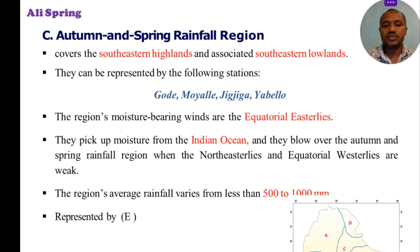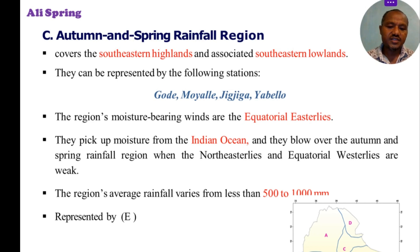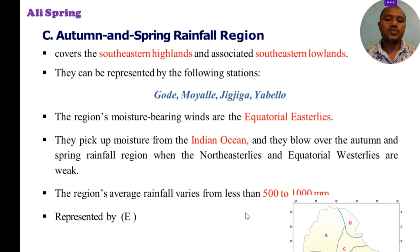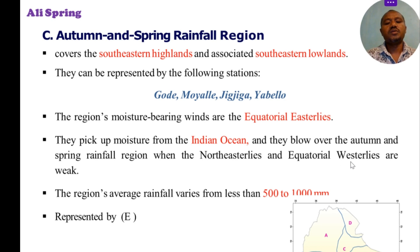Moisture comes from the Indian Ocean. These winds pick up moisture from the Indian Ocean and blow over the autumn and spring rainfall region when the north-easterlies and equatorial easterlies are weak, allowing flow from high to low pressure areas. The region's average annual rainfall ranges from 500 to 1,000 mm.